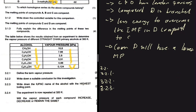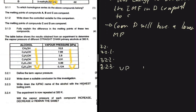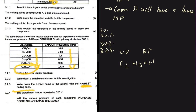For question 3.2.3, we need the IUPAC name of the alcohol with the highest boiling point. The relationship between vapor pressure and boiling point is: the lower the vapor pressure, the higher the boiling point, and vice versa. So we look for the lowest vapor pressure, which belongs to the last alcohol in the table: C₆H₁₃OH. Since it is a straight-chain primary alcohol, its IUPAC name is hexan-1-ol.